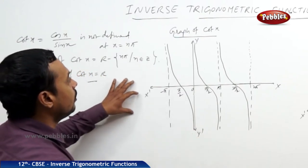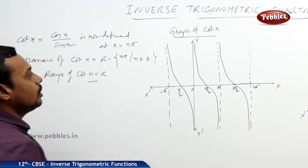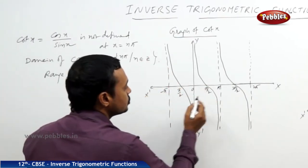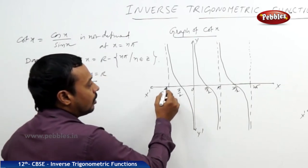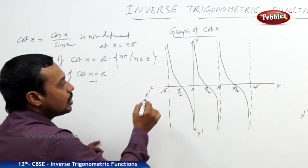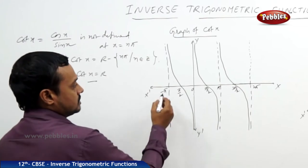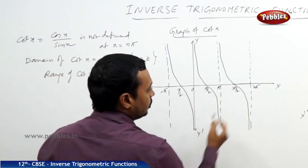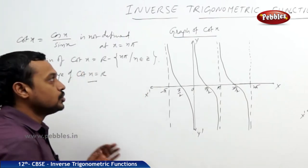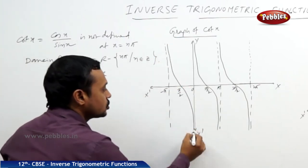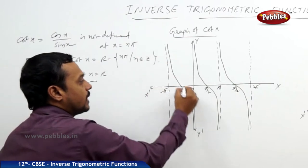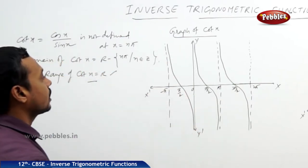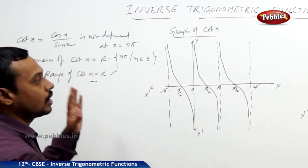So this is the graph of cot x. While observing cot x, all the cot values belong to the set of real numbers. Between minus pi to 0, or 0 to pi, or pi to 2pi — whatever interval you choose — the values belong to minus infinity to plus infinity. So that is nothing but R. Hence, the range of cot x is equal to R.